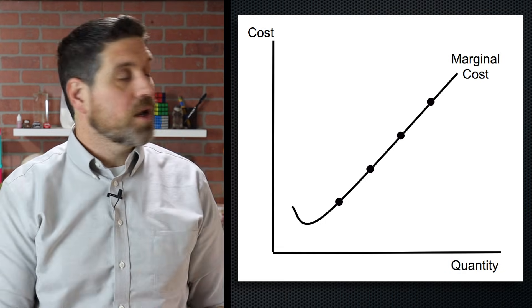But what happens if the price falls even further? It's not green, but it's still yellow, which means you keep producing, except you're making a loss. When firms are making a loss, eventually some of those firms are going to leave the market to go make money somewhere else, and that'll cause the price to go back up because there's less competition — putting us back at normal profit in the long run. But what happens if the price keeps falling? At what point do you just shut down? It's right here at the minimum AVC. If the price falls below that, you produce nothing — you shut down, you tell your workers to go home. That's called the shutdown rule.